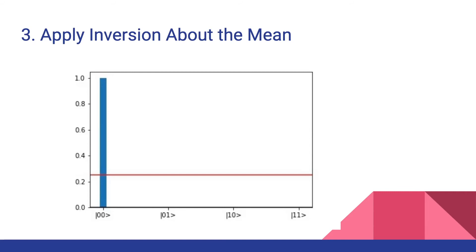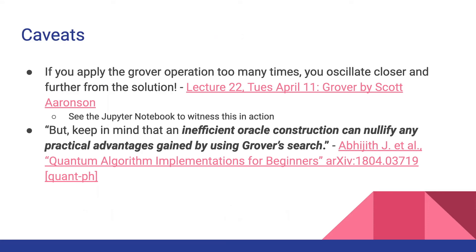Now the caveats — I'm not a quantum hype man. If you apply inversion about the mean too many times, you actually get further from the right answer. Scott Aaronson has an analogy: if you're cooking a soufflé and leave it in the oven too long, the soufflé rises and then falls. In the quantum example, if you keep applying that inversion about the mean, it oscillates — getting closer and further from the answer repeatedly.